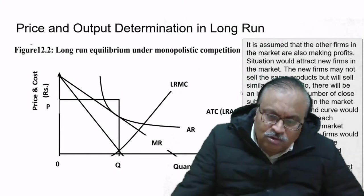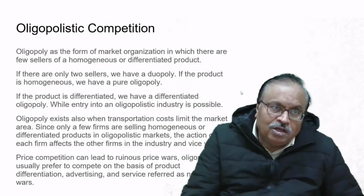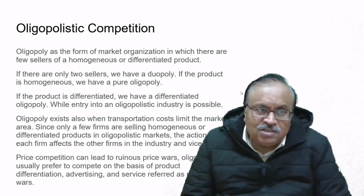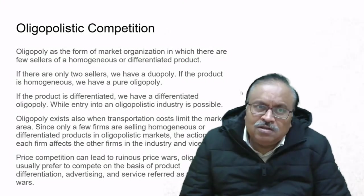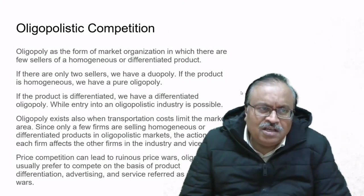The demand curve will continue to shift downwards until it becomes tangent to the LRAC at a given price P and output Q. That is the basic concept of long-run equilibrium under monopolistic competition.